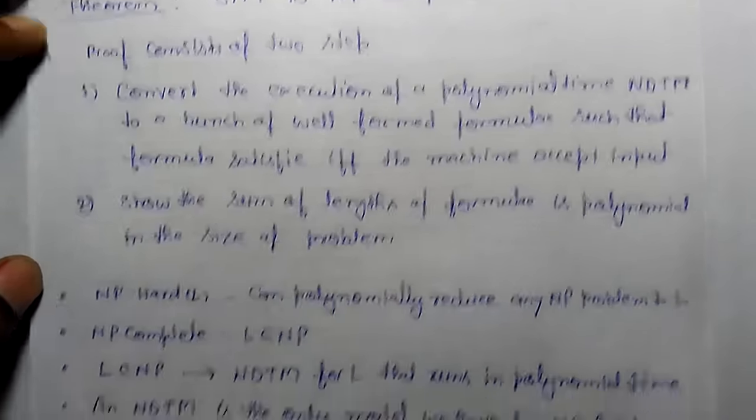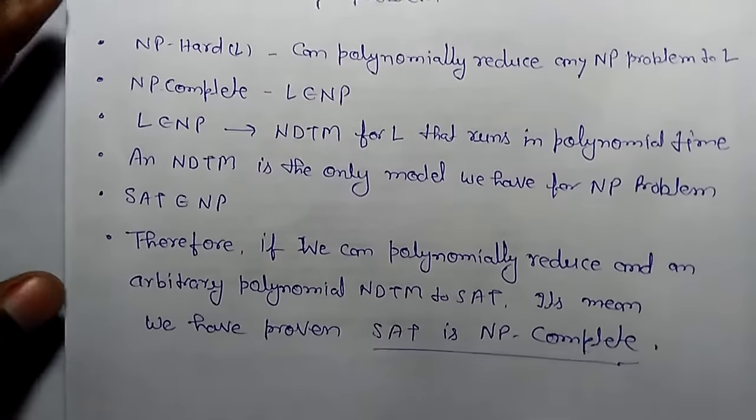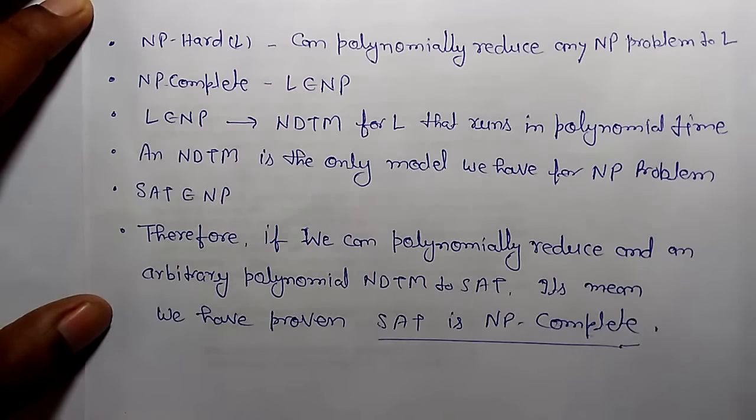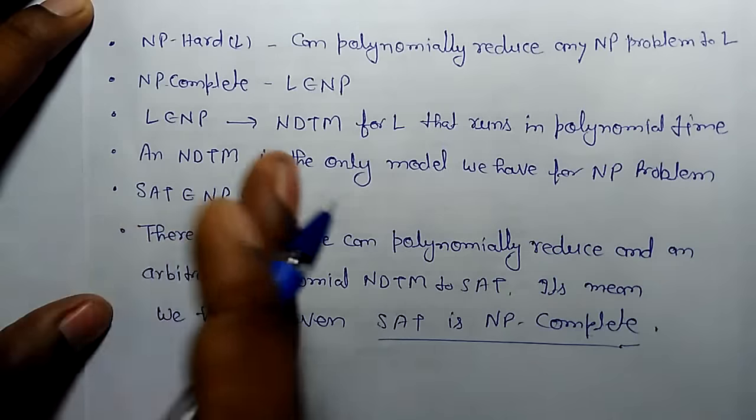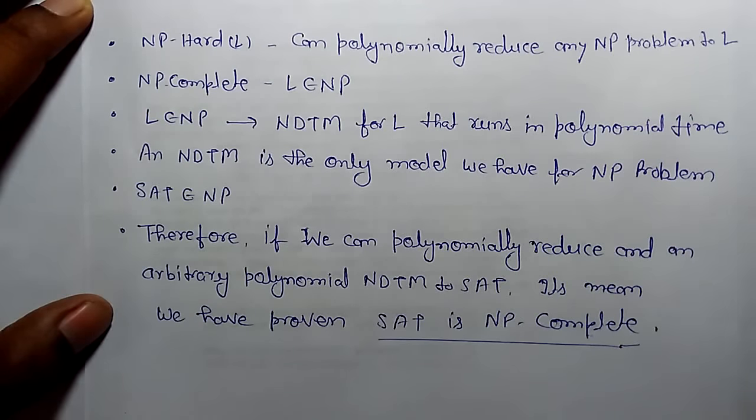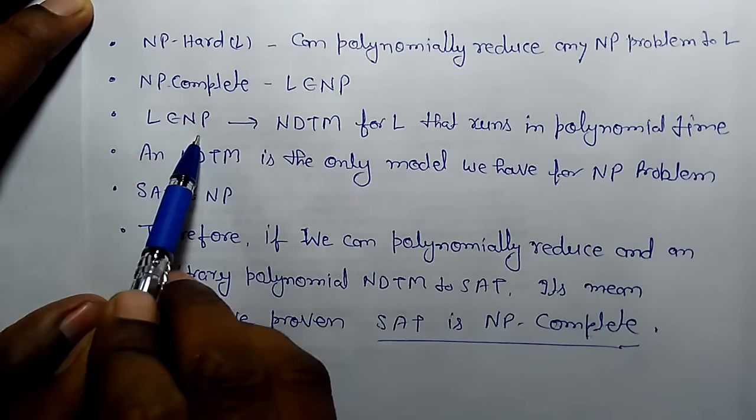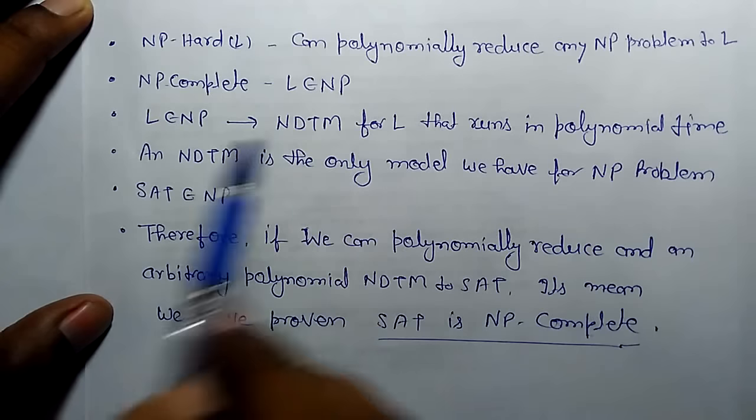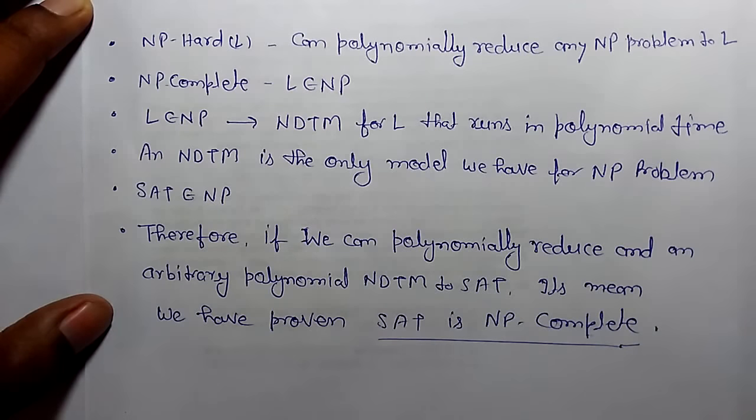The steps can be done this way: First, if a language is NP-hard, we can polynomially reduce any NP problem to L. Second, if it is NP-complete, it means L belongs to NP. If L belongs to NP, then a non-deterministic Turing machine is the only model we have for NP problems.